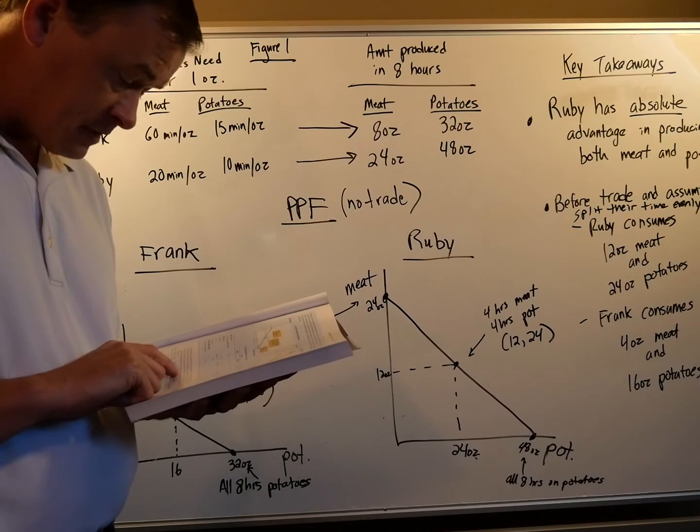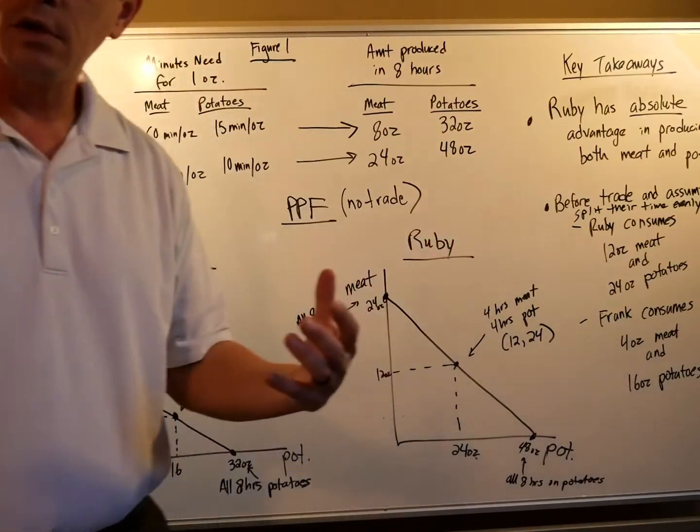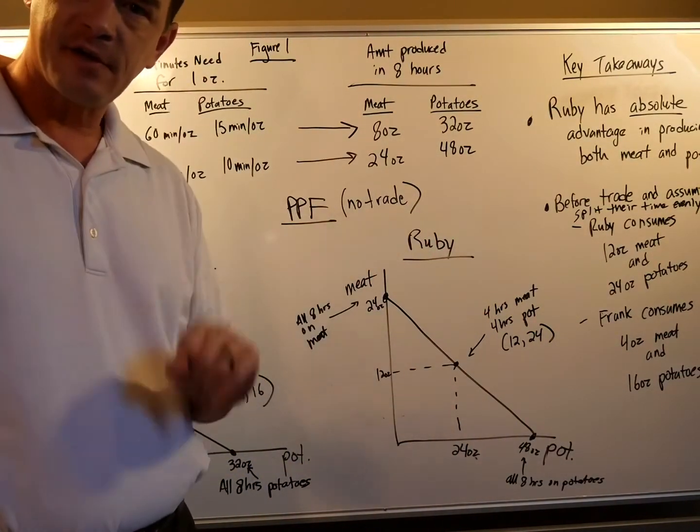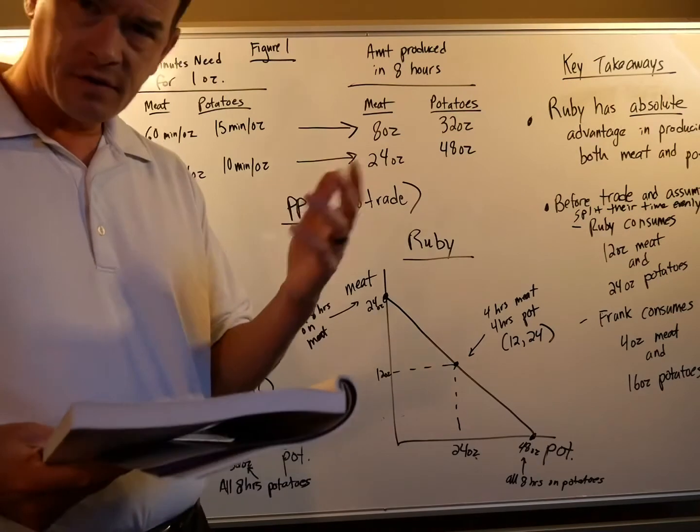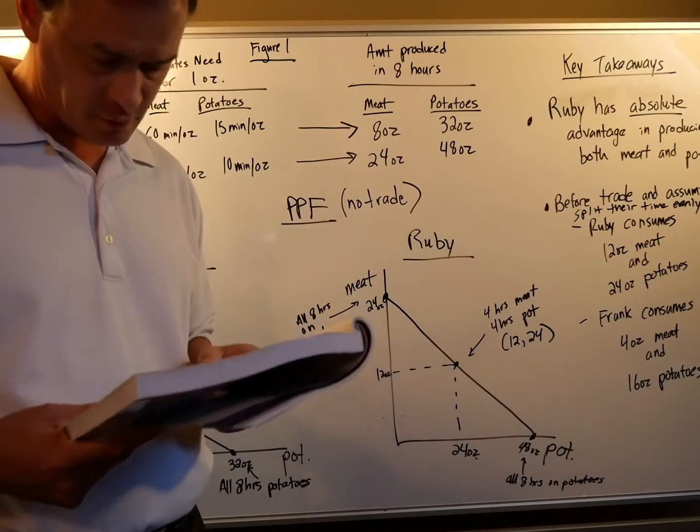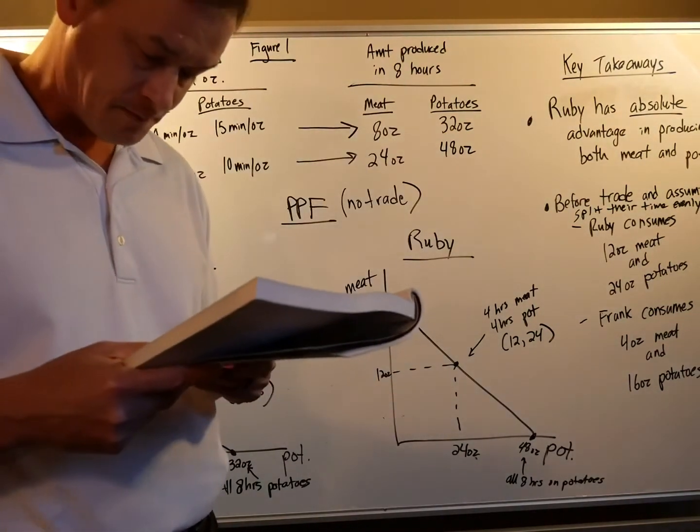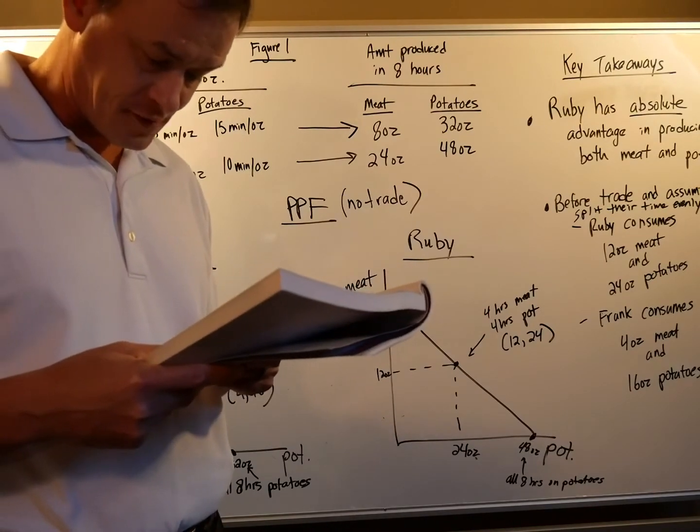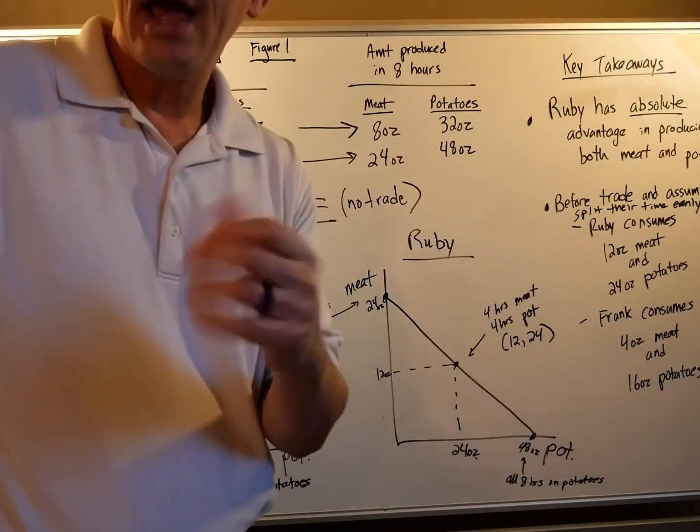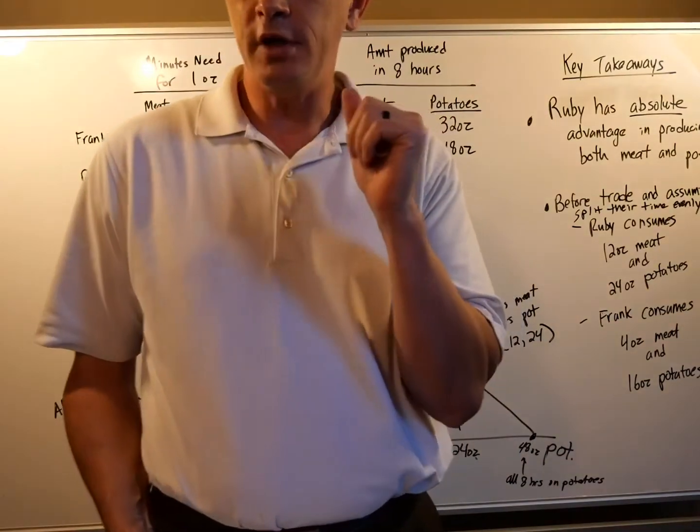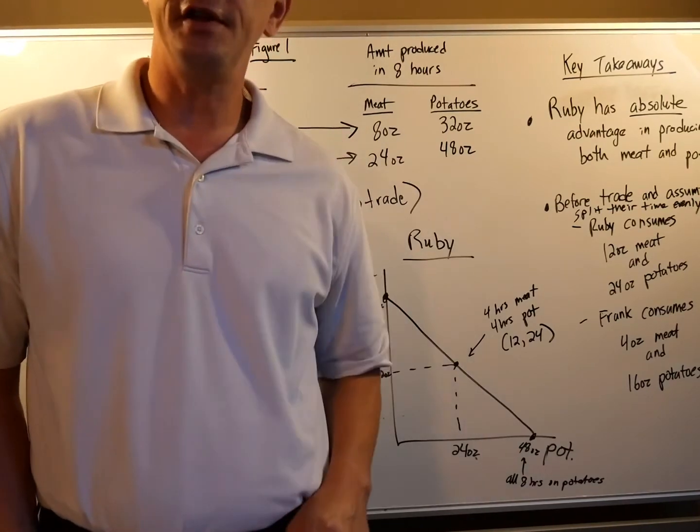So she's going to end up with 13 and 27. And over here she had 12 and 24. So she wins too. So can trade make everyone better off? Yes. But guess what? Frank's like, I don't know. This sounds too good to be true. Skeptical. Ruby says, Here, I've summarized my proposal in this simple table. And guess what? I'll summarize that table in the next video and we will break down how trade can make everyone better off, including Frank and Ruby here. But it's not based on absolute advantage. It's based on something called comparative advantage. Check out the next video for all the information.